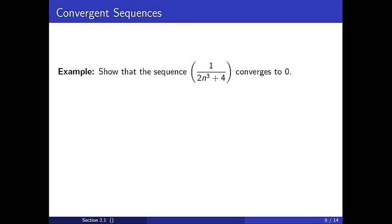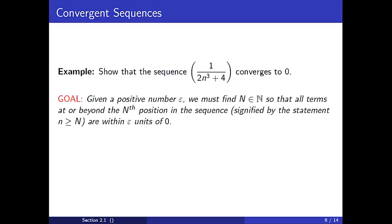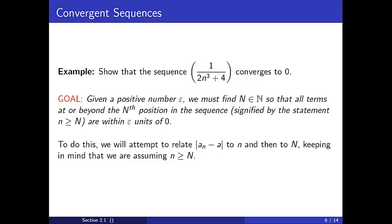For our first example, we will show that the sequence 1/(2n³+4) converges to 0. We will discuss the components of the proof before writing out a formal proof — in other words, we will show all of our scratch work. You should get used to this type of pre-thinking. One thing to notice is that we are working initially in the opposite order that things will appear in our proof. Given a positive number epsilon, we must find a natural number N so that all terms at or beyond the Nth position are within epsilon units of 0. We will first attempt to relate the quantity |a_n − a| to n and then to N, keeping in mind that we are always assuming that n ≥ N.